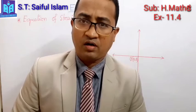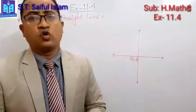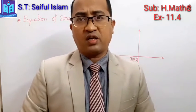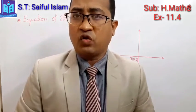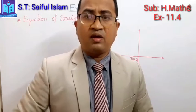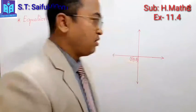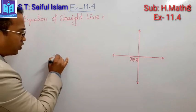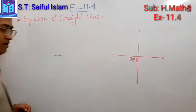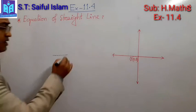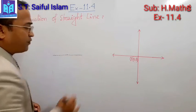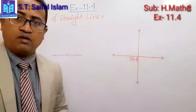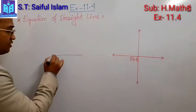At first you should know what a straight line is. A line is a moving point — if a number of points move forward, they make a line. And if the points do not change direction, then it is called a straight line.